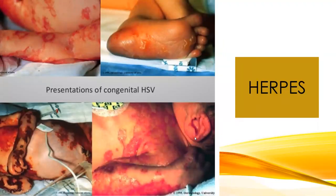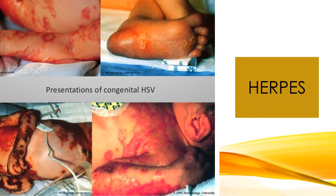If a baby is born to a mom with a herpes infection, the baby can contract herpes and these babies typically don't survive. Congenital herpes infection occurs when a mom had an active outbreak during pregnancy or when the baby is born through an active infection. Many women with an active herpes infection at the time of delivery will have a C-section to reduce the chance of infection.